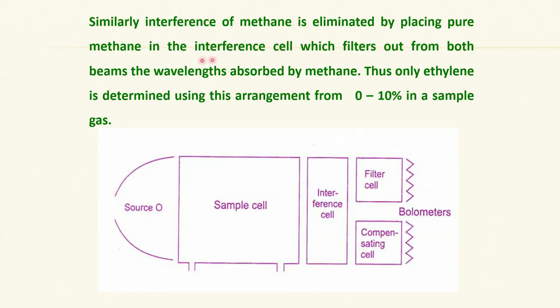It is something like cancelling each other. Interference of methane also can be similarly eliminated by placing pure methane in the interference cell. Only ethylene is being determined using this arrangement from 0 to 10 percent in a sample gas. You should note down the percentage. We are not talking about the ppm level or milligram level or trace ultra trace. We are talking about percentage. That is why such instruments are used in the process industries petrochemical complexes.